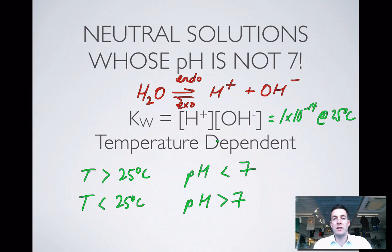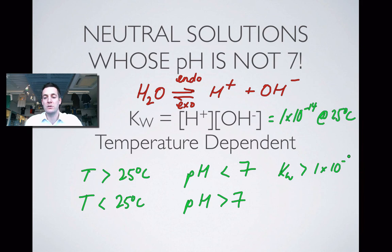Something you do have to be able to do in year 12 is explain the effect of temperature on the pH of neutral solutions and on the value of KW. When the temperature is higher than 25 degrees centigrade, KW is greater than 1 times 10 to the minus 14. When the temperature is lower than 25 degrees centigrade, KW becomes less than 1 times 10 to the minus 14.